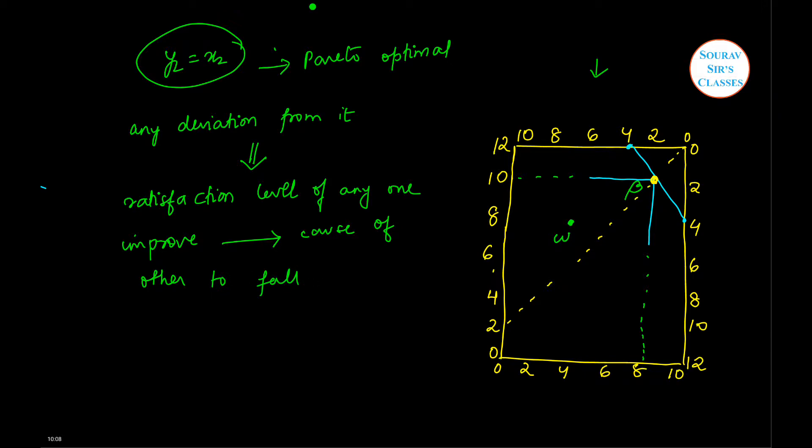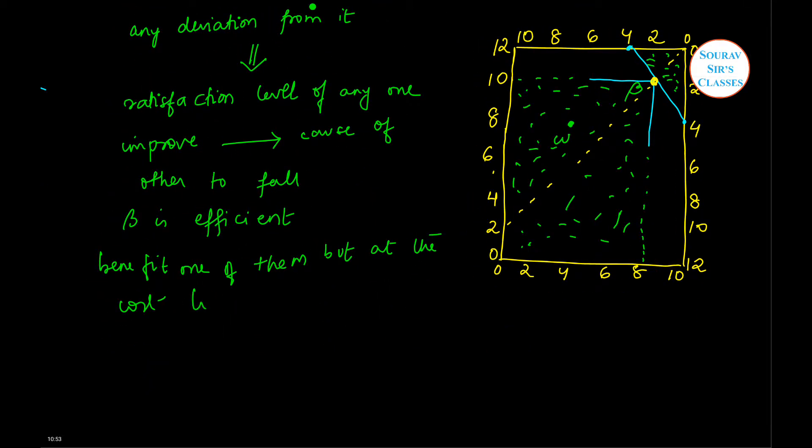In this graph we have seen that beta, the point denoted by beta, is efficient because any movement to the shaded region, this is the shaded region and this is also the shaded region, any movement to the shaded region will benefit one of them but at the cost of satisfaction or loss of satisfaction level of the other.